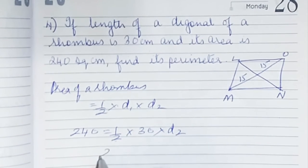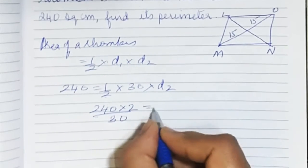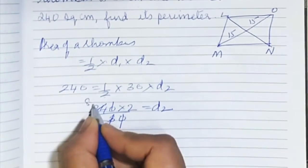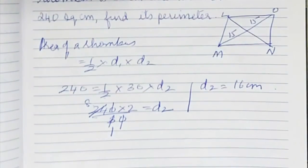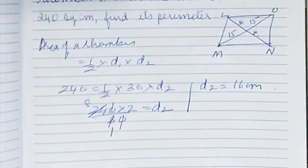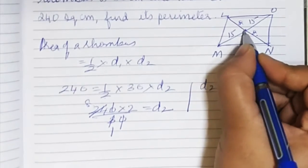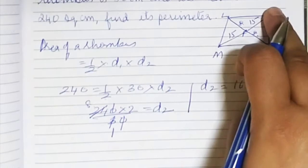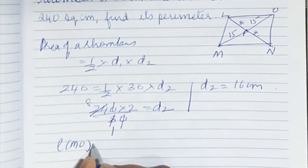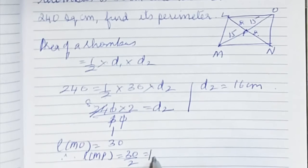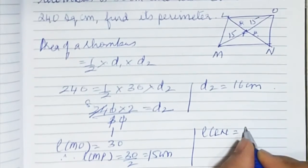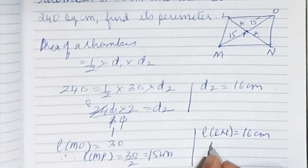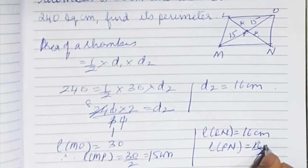Rearranging: d2 equals 240 into 2 divided by 30. The zeros cancel and we get 16. So diagonal 2 is 16 centimetres, meaning it is split into 8 and 8. We label the centre P. MP is half of 30, which is 15 centimetres. LN is 16 centimetres, so PN is half of 16, which is 8 centimetres.